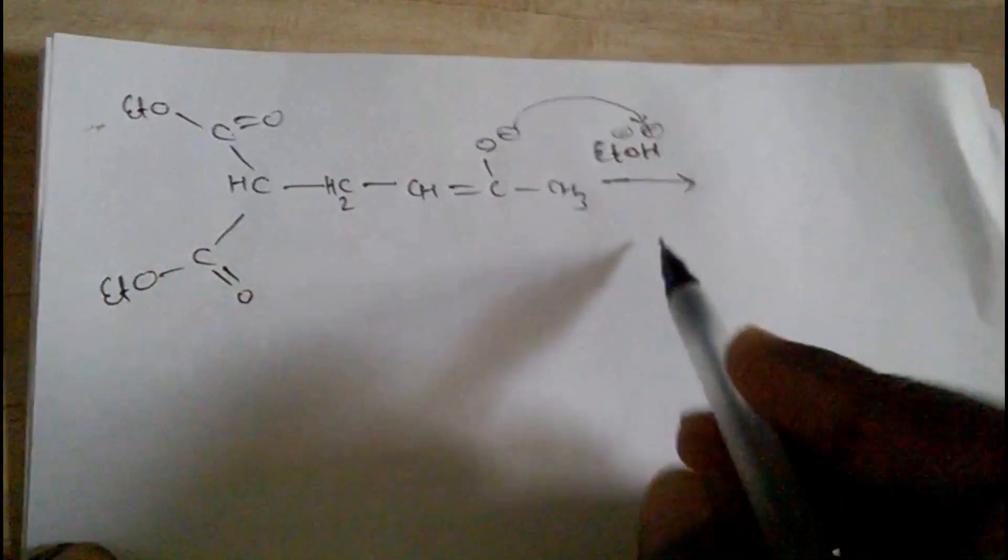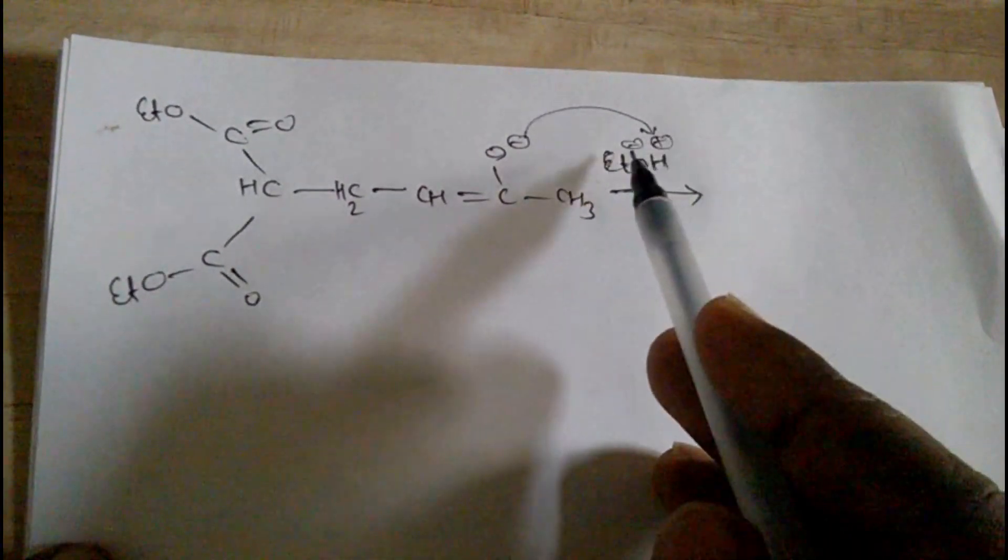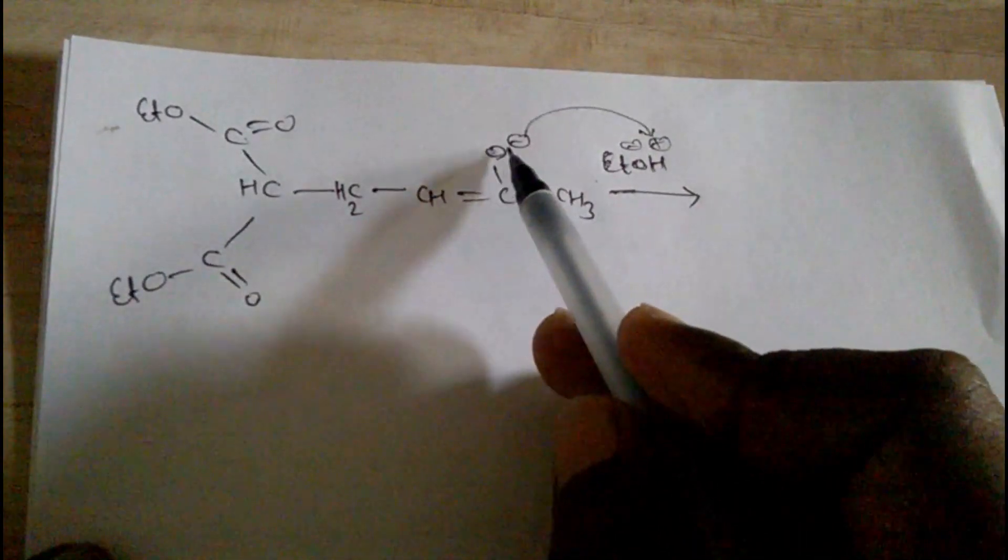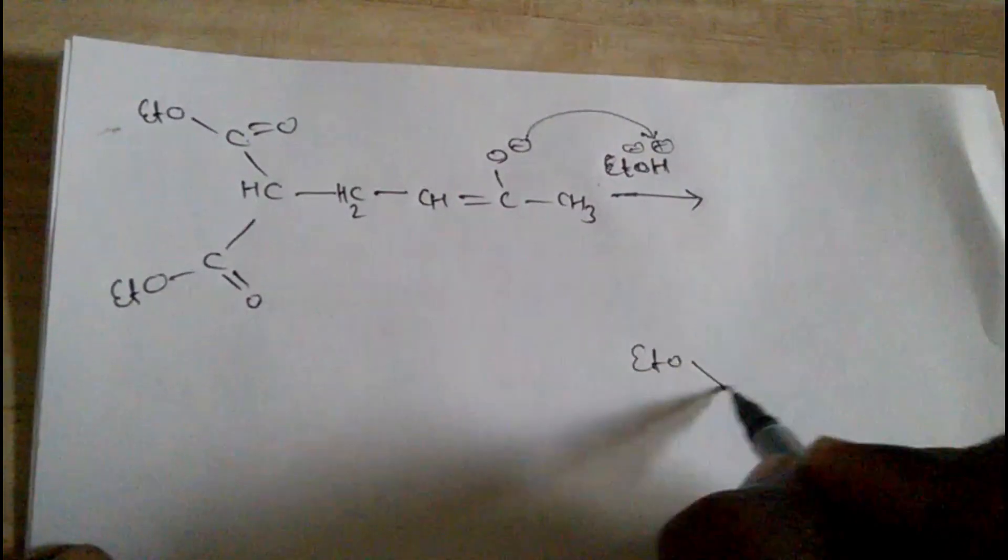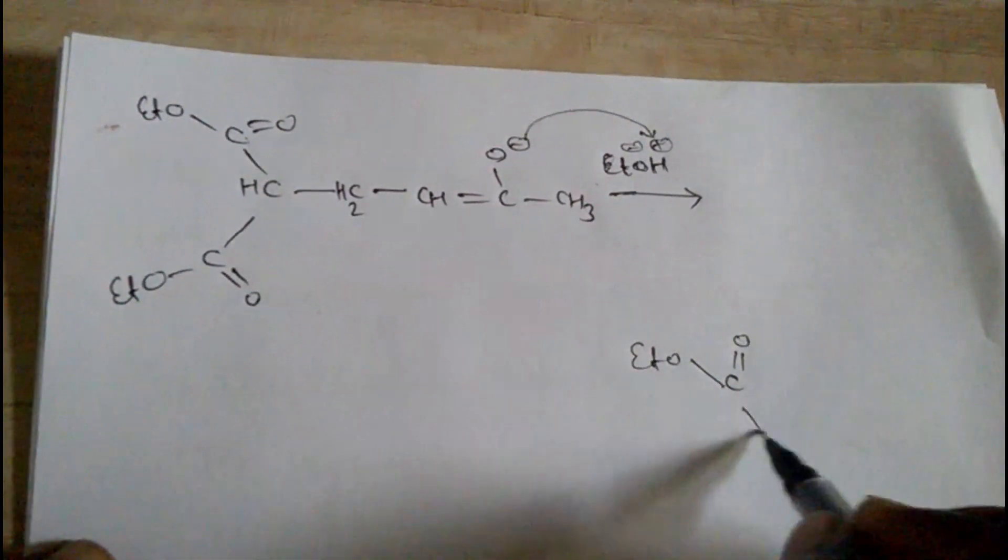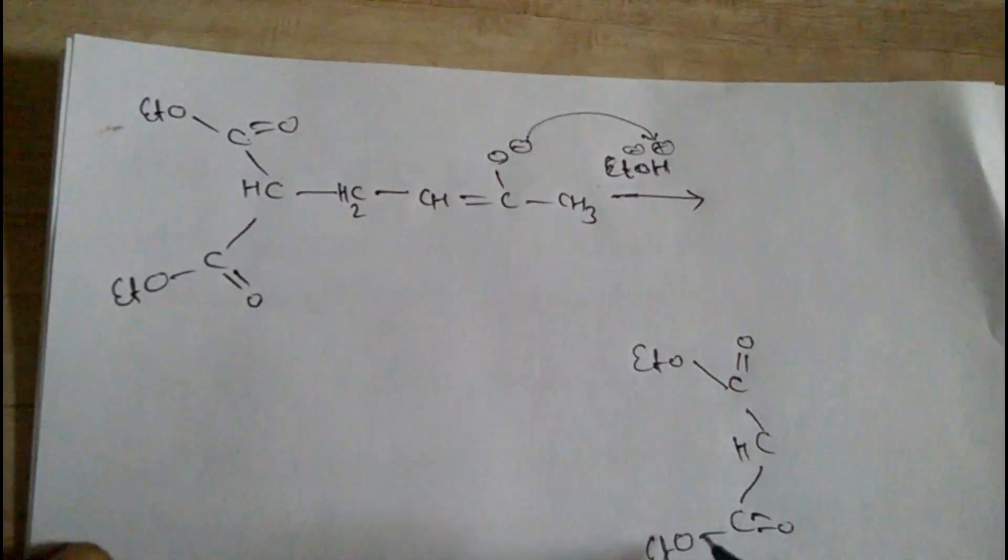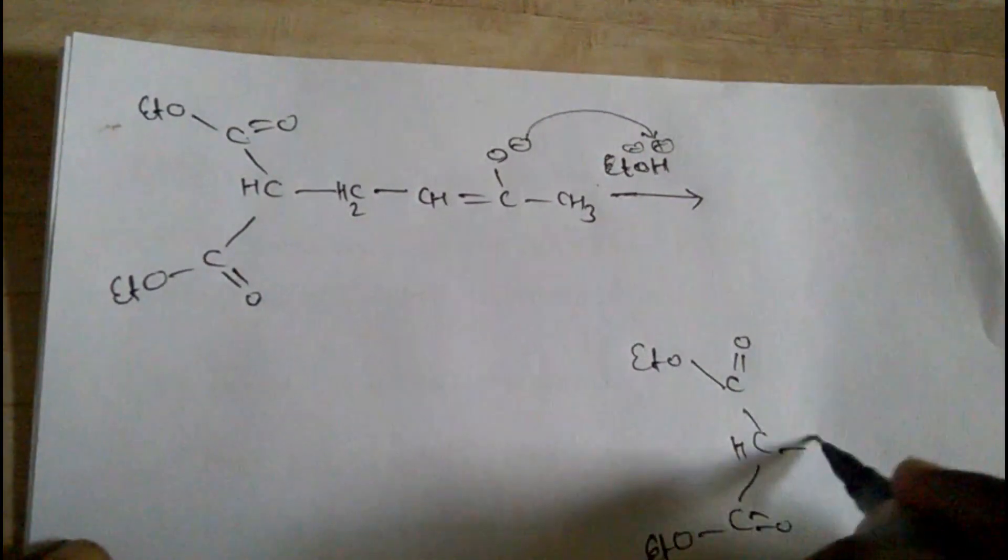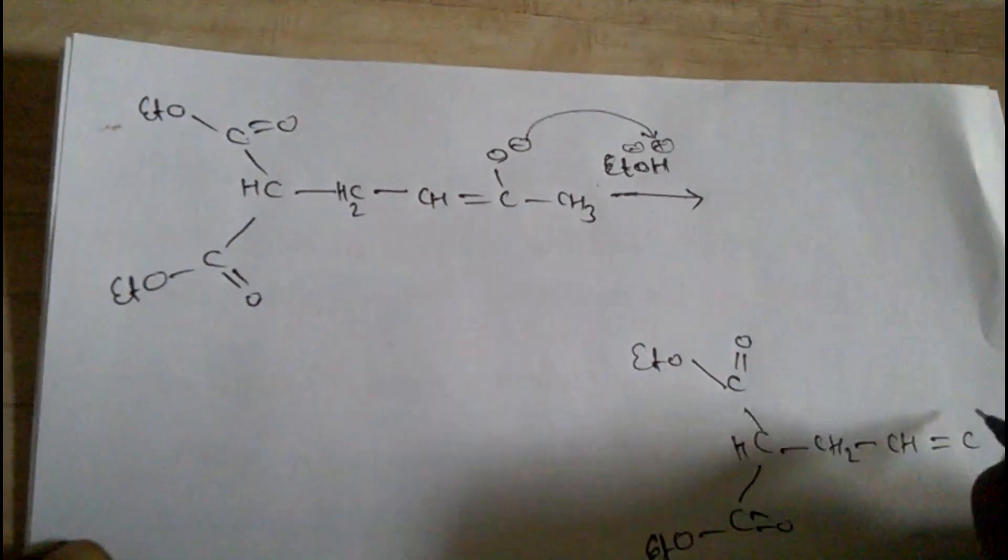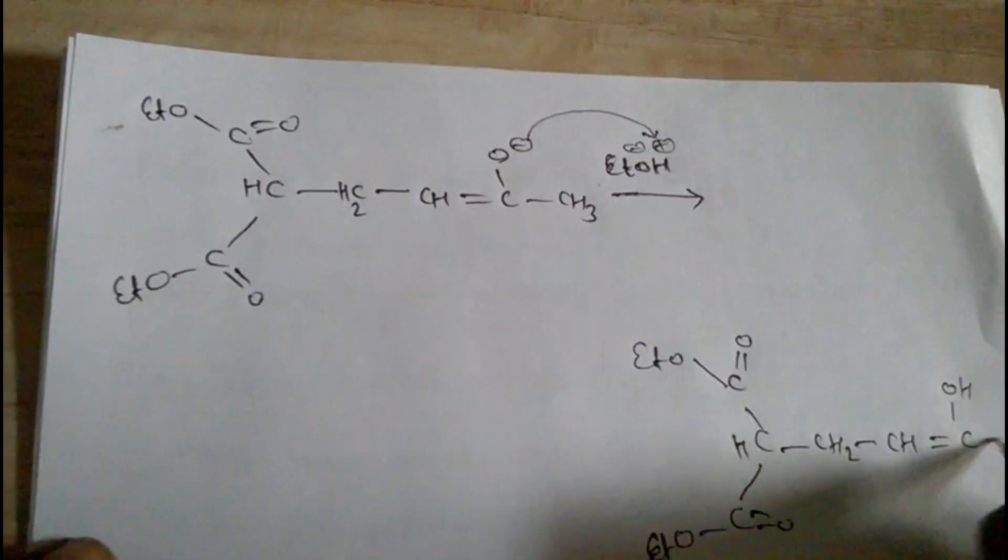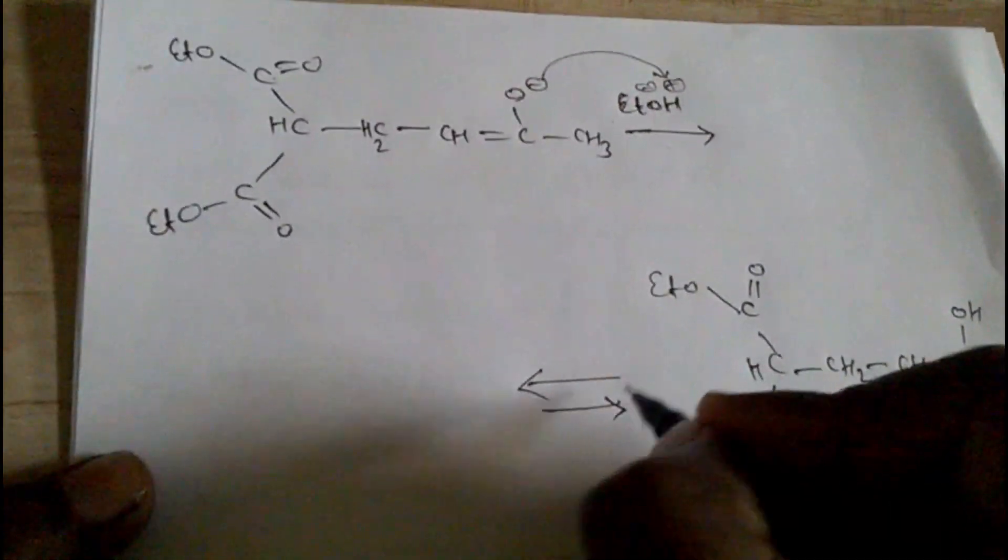This is treated with EtOH. The oxygen having negative charge will attack on H⁺ and we get a structure: CH-C=O-OEt, CS₂-CH=C-OH, and CH₃. This is for the tautomerization.